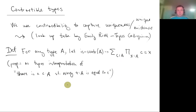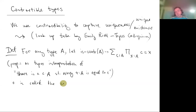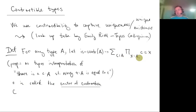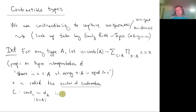This perfectly intuitively expresses that there is a unique element in A. The first component, the little c, is called the center of contraction. The second component can be expressed as a homotopy from the constant function at c to the identity on A in self-maps from A to A. This homotopy is called the contraction itself.